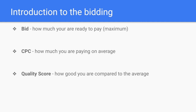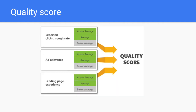Another thing is the quality score. Quality score is the mark that Google Ads gives you to understand how good you are. This is the most important thing inside your Google account, because depending on the quality score, you can pay one dollar per click, 50 cents per click, or ten dollars per click.